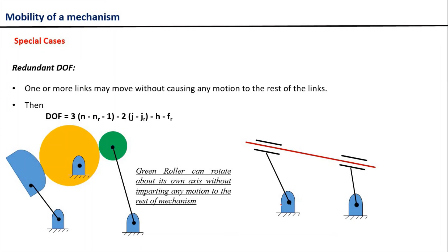Let us take another example of a mechanism with redundant degree of freedom. In this mechanism the total number of links is equal to 4: link 1, link 2, link 3, and link 4. It can be easily observed that the red link, link 3, can slide relative to the prismatic pairs without imparting any motion to links 2 and 4. So link 3 is generating a redundant degree of freedom in the mechanism. If we rotate link 2 relative to link 3, no output motion will be obtained at link 4, so the actual degree of freedom should be equal to 0.